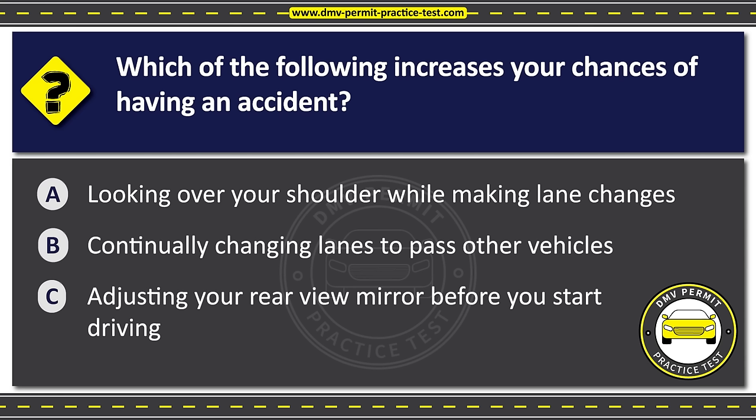Question thirty-nine. This sign means Option A: Traffic is permitted to pass on either side of an island or obstruction. Option B: Right lane stays to the right, left lane stays to the left. Option C: Keep to the left, merging traffic ahead. The correct answer is Option A: Traffic is permitted to pass on either side of an island or obstruction.